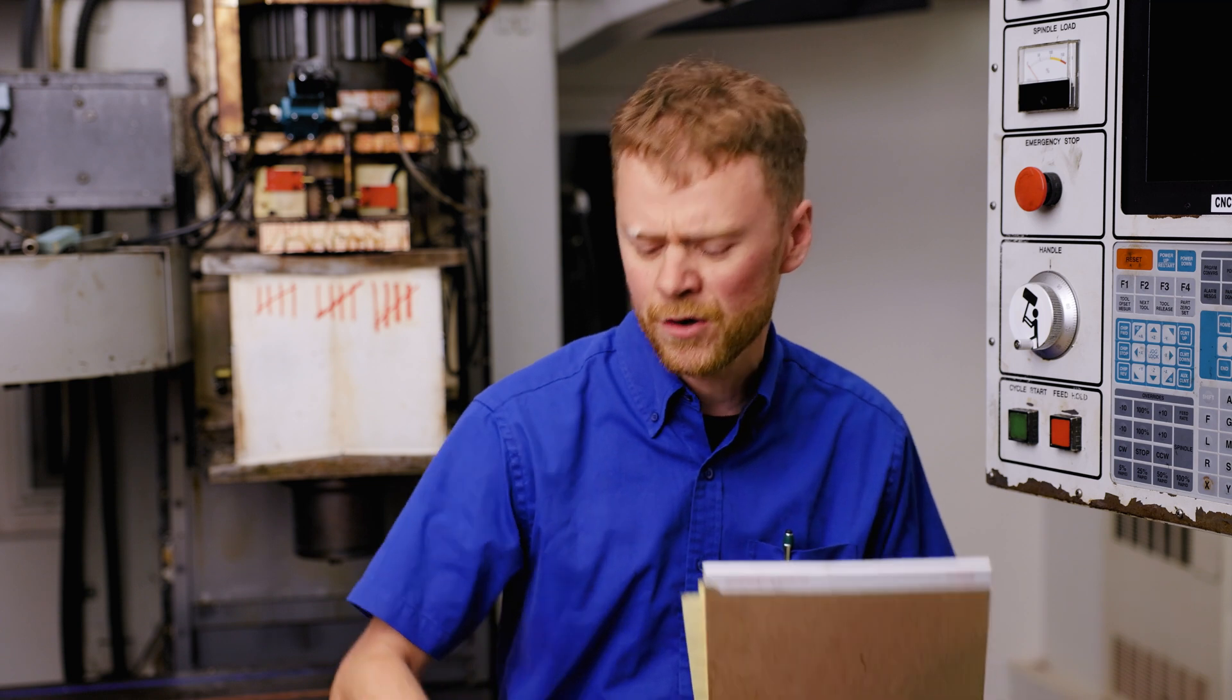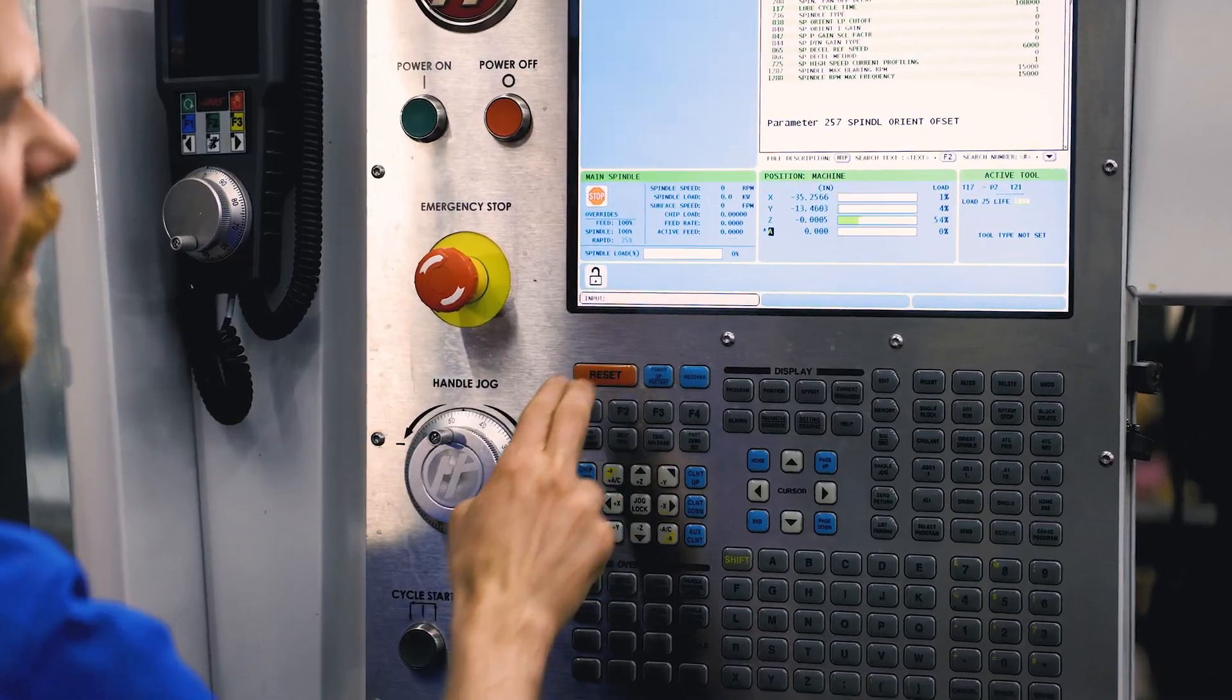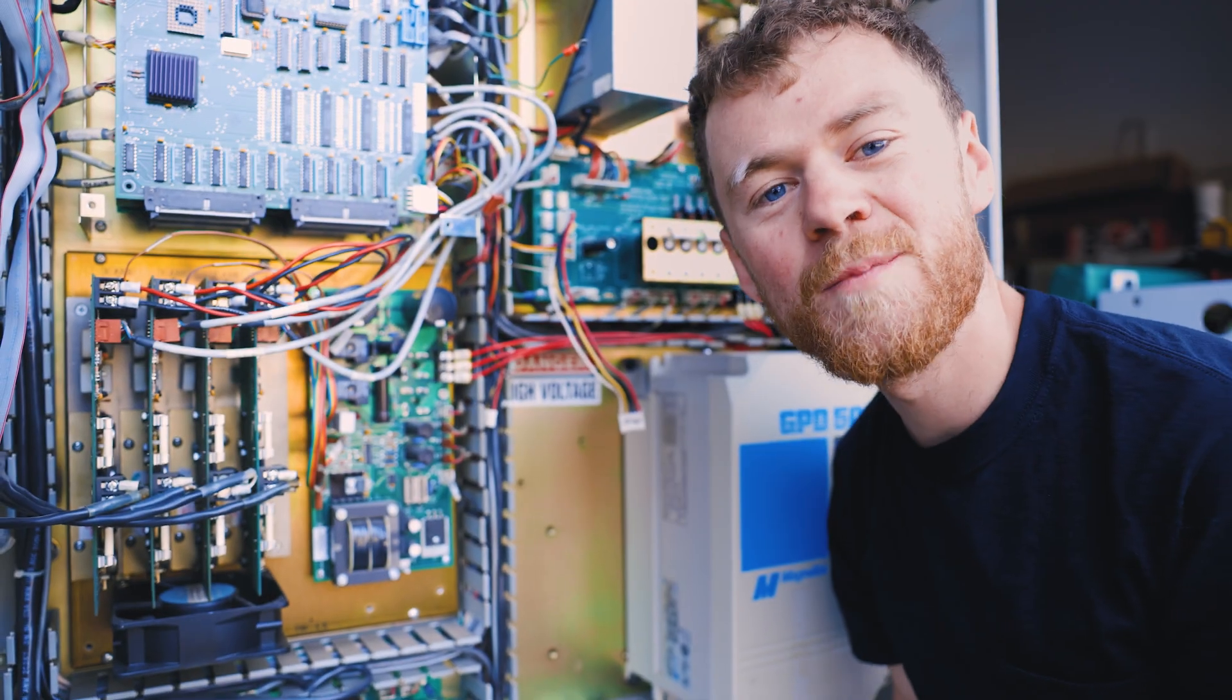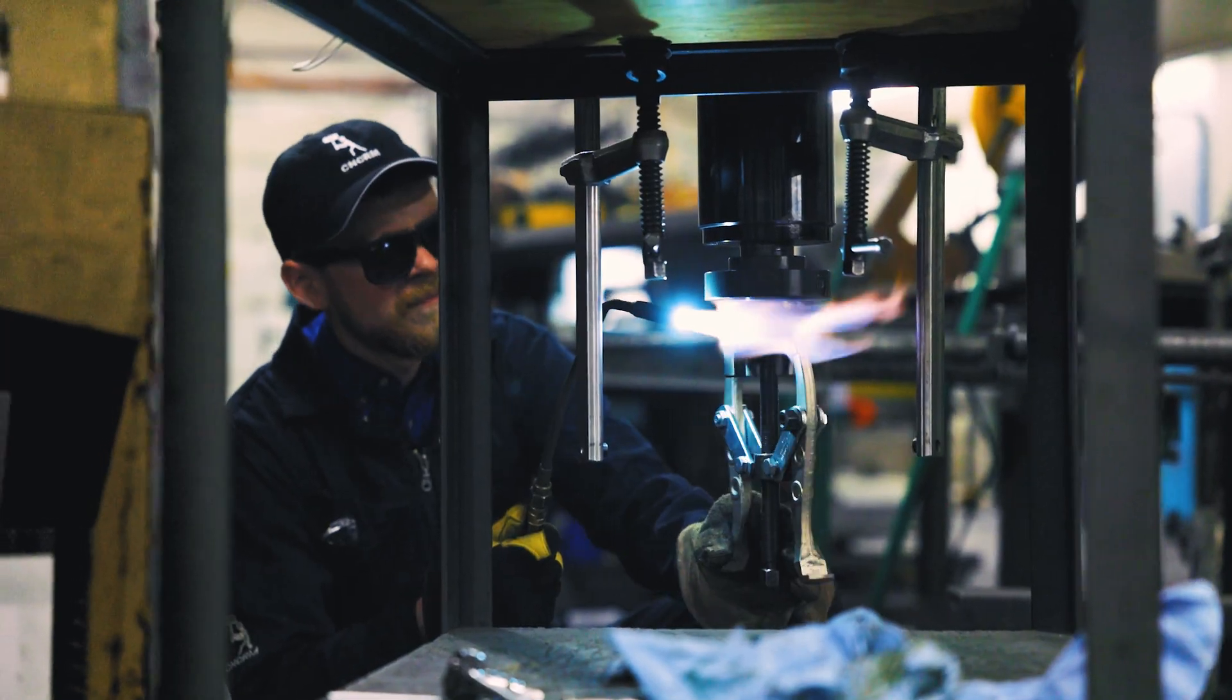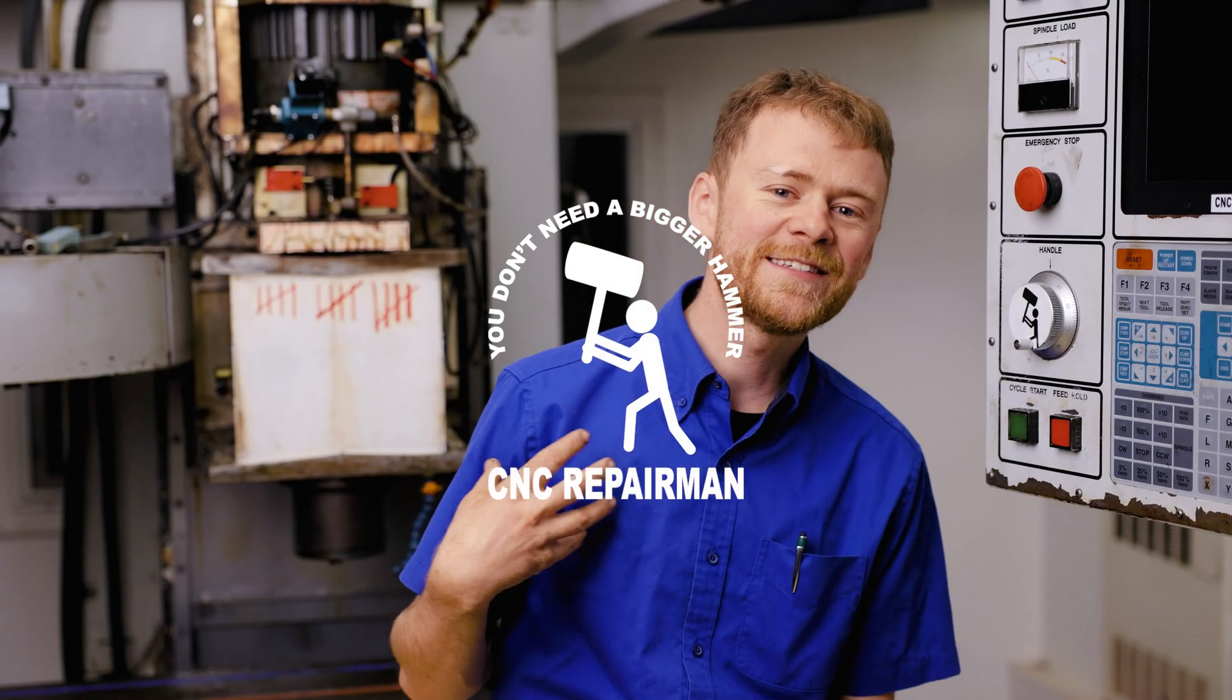Don't get an old junker off a Facebook marketplace. That one that was free was 70,000 pounds. Three semis later, broken concrete, forklifts stuck in the asphalt. I'm the CNC Repairman. Can I wear your signature belt? I'm gonna show you how the Niagara Falls and pull it off.